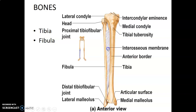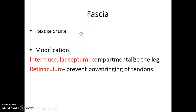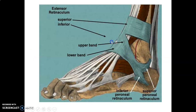Fascia cruris is the fascia of the leg — remember, fascia lata is the fascia of the thigh. Modifications of fascia cruris include the intermuscular septum, which compartmentalizes the leg into three compartments: anterior, posterior, and lateral. We also have the retinacula, which are connective tissue structures that prevent bowstringing of tendons. We have the extensor retinaculum, which is Y-shaped with superior and inferior portions, the peroneal retinaculum, and on the medial aspect the flexor retinaculum, which holds the flexor tendons around the tarsal tunnel.